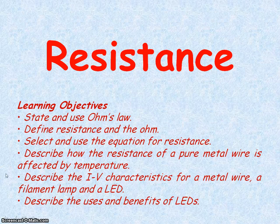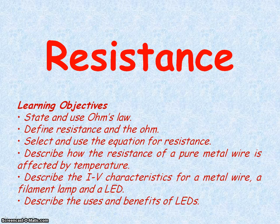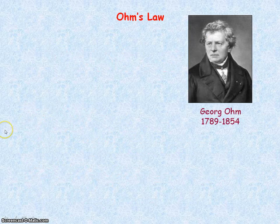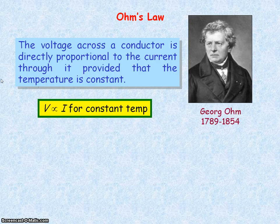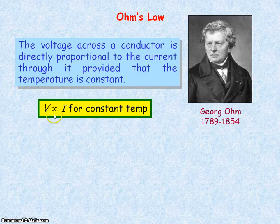We're going to be looking at resistance and current voltage graphs, as well as LEDs. Ohm's law states that the voltage across a conductor is directly proportional to the current through it, provided that the temperature is constant. We can express this mathematically as voltage is proportional to current.